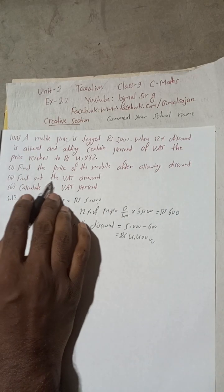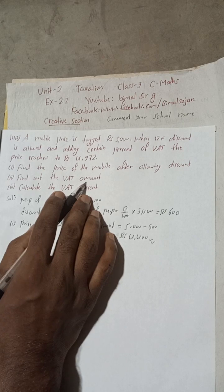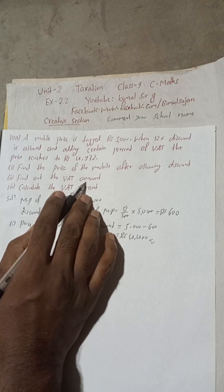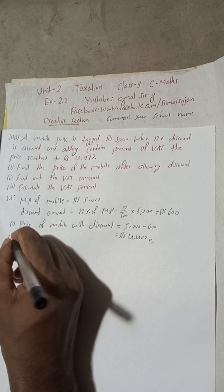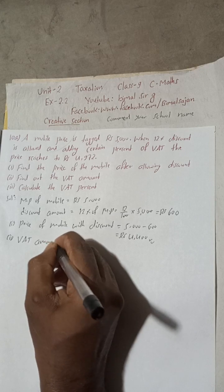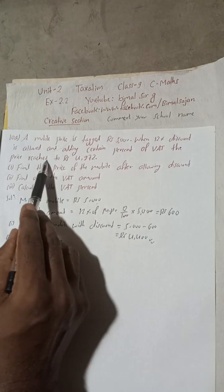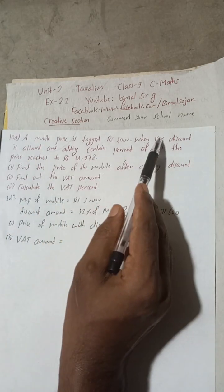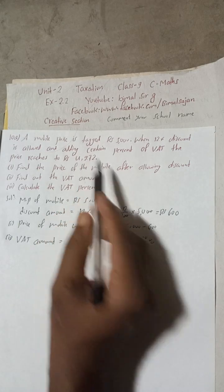Now find out the VAT amount. For this second question, you can just apply the formula. So the formula will be here: VAT amount, number two. VAT amount formula will be price with VAT, because a certain percent of VAT the price reaches. So with VAT and allowing discount, this is the total price. That means this price is with VAT. So this price minus price without VAT.